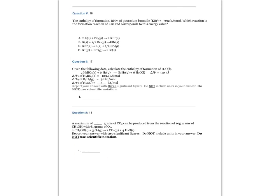Question number 16: The enthalpy of formation, delta H sub F, potassium bromide, is negative 392 kilojoules per mole. Which reaction is the formation reaction of potassium bromide and corresponds to this energy value?